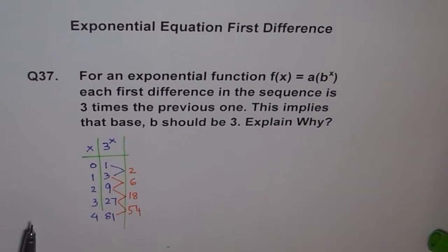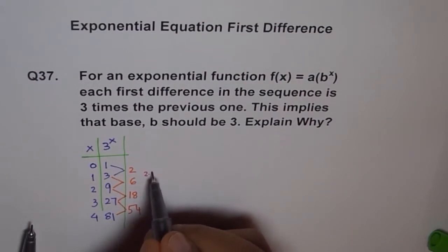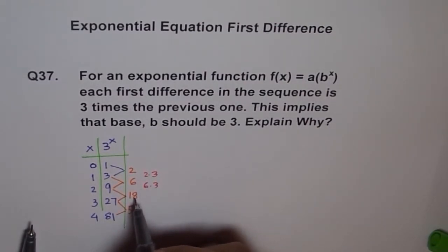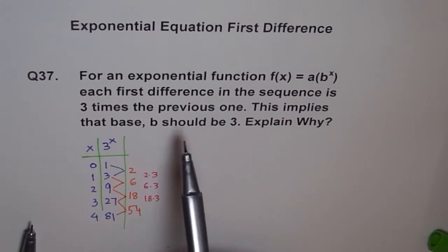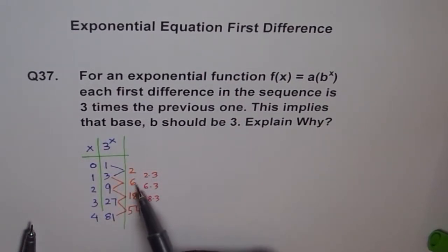So what we see here is very interesting. What is the difference? This is 2 and what is 2 times 3 is 6. So 6 is basically we get 2 times 3 as 6, and then we get 6 times 3 as 18, and 18 times 3 as 54. So this is what we mean by saying that the first difference in the sequence is 3 times the previous one. If I divide 6 by 2, I get 3. If I divide 18 by 6, I get 3. If I divide 54 by 18, I get 3.